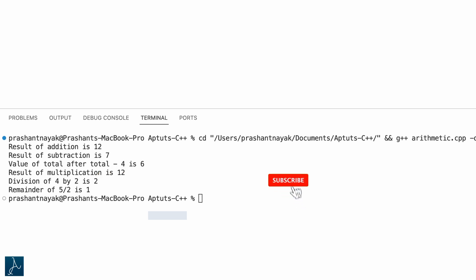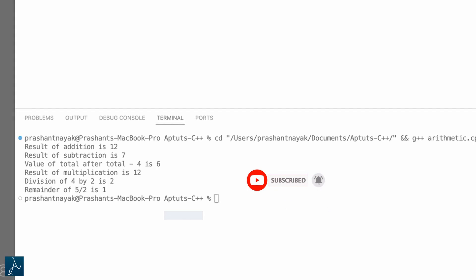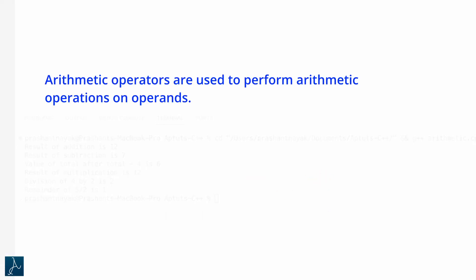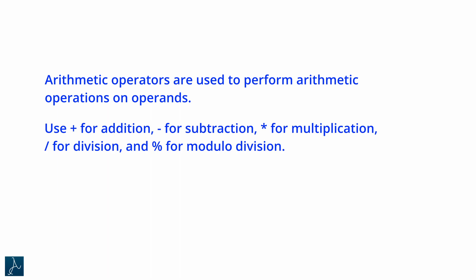If you are finding this video helpful, could you please click the like and subscribe button. Let's summarize what you have learned: arithmetic operators are used to perform arithmetic operations on operands. Use plus for addition, minus for subtraction, asterisk for multiplication, and forward slash for division.